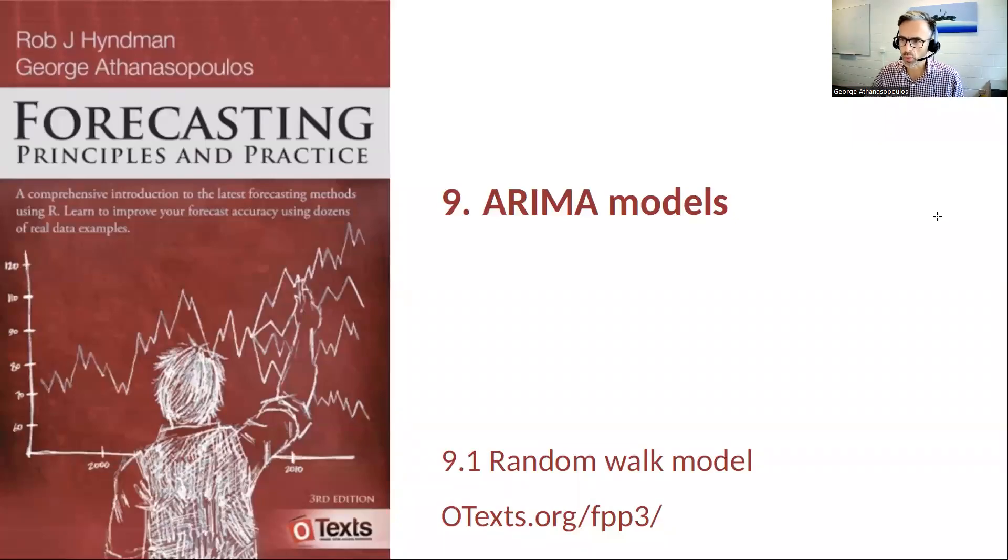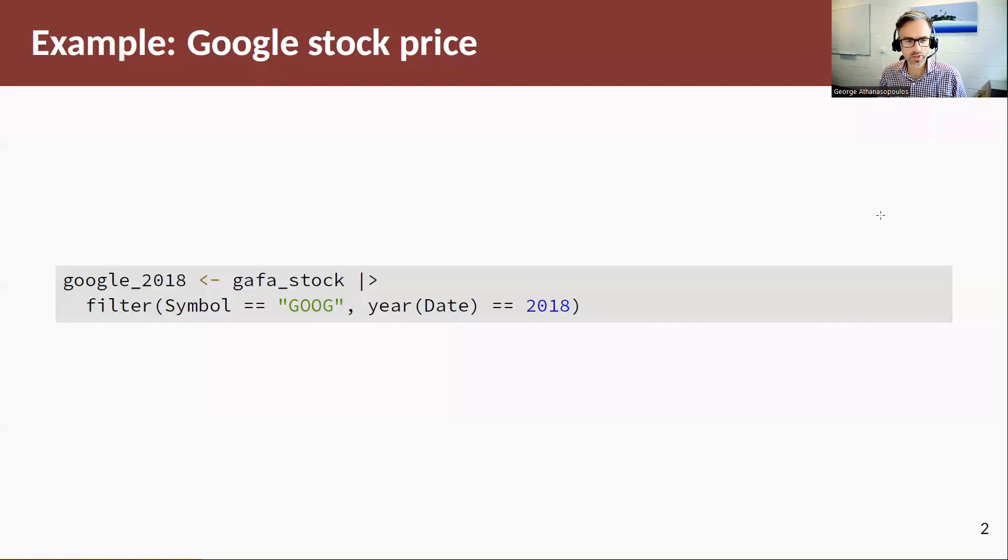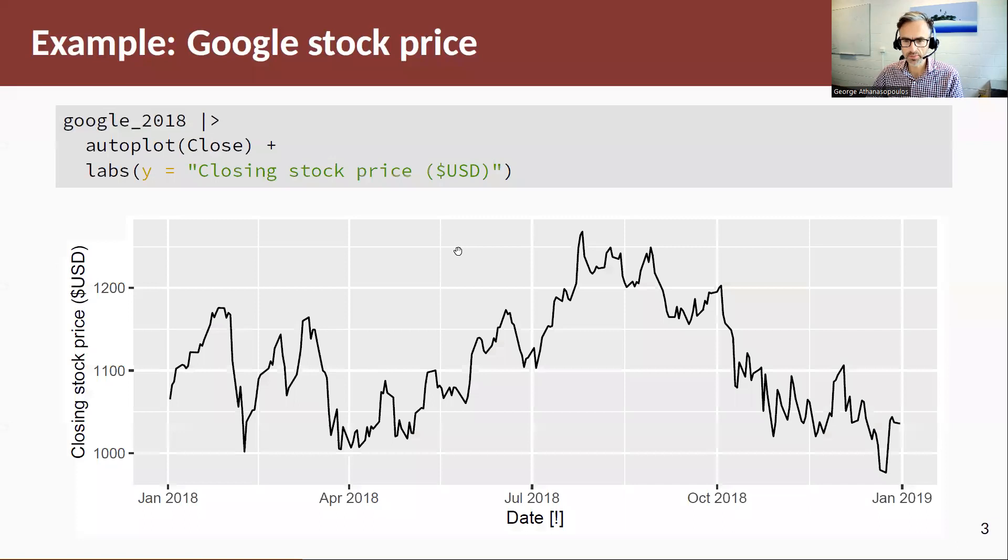In this video we're going to think about the random walk model. As a reminder, let's extract from the GAFA stock symbol the Google closing stock price for 2018. Here's a plot of the data that we saw in the previous video. Looking at this time series, we see the typical wandering behavior of financial time series, of financial index or a closing stock price.